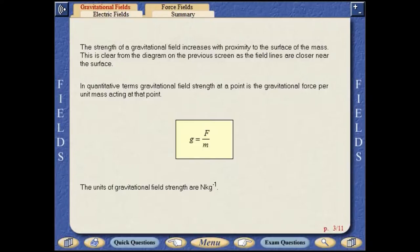In quantitative terms, gravitational field strength at a point is the gravitational force per unit mass acting at that point. The units of gravitational field strength are newtons per kilogram. This is dimensionally equivalent to meters per second per second.